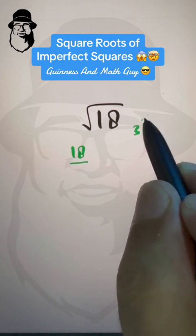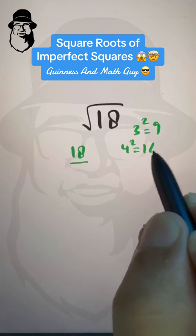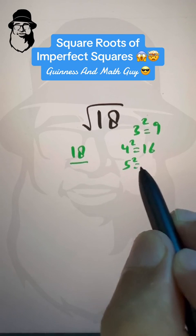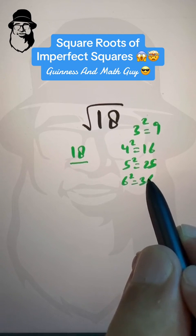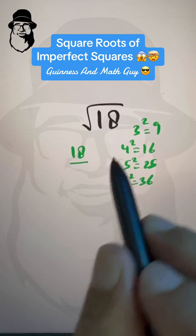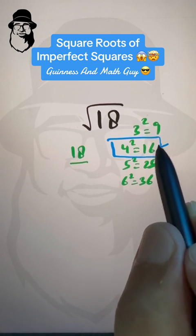Like, 3 squared is 9, 4 squared is 16, 5 squared is 25, and 6 squared is 36. So, we can say this is the nearest square, that is 16, right?